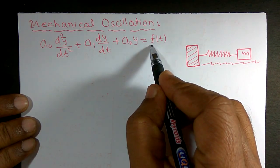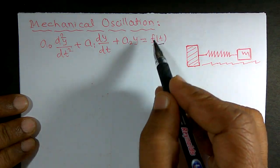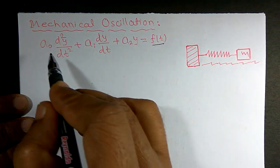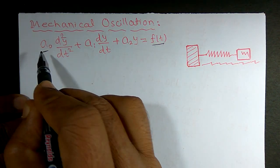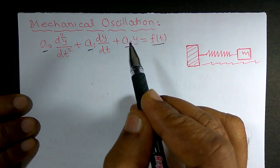So clearly right hand side is not equal to zero, namely they have given f(t). It means it is a function of t and the coefficients a0, a1, a2 are constants.